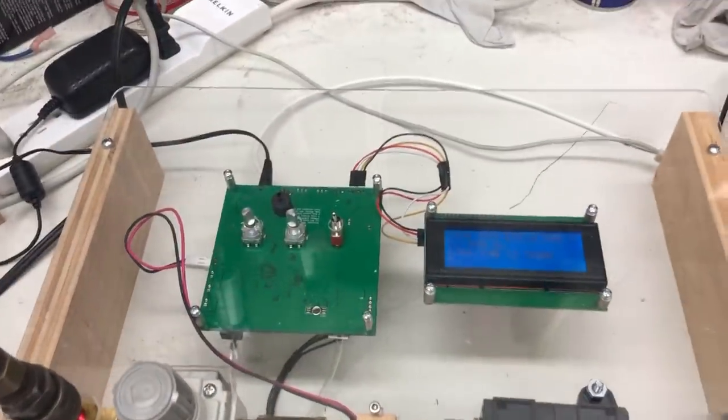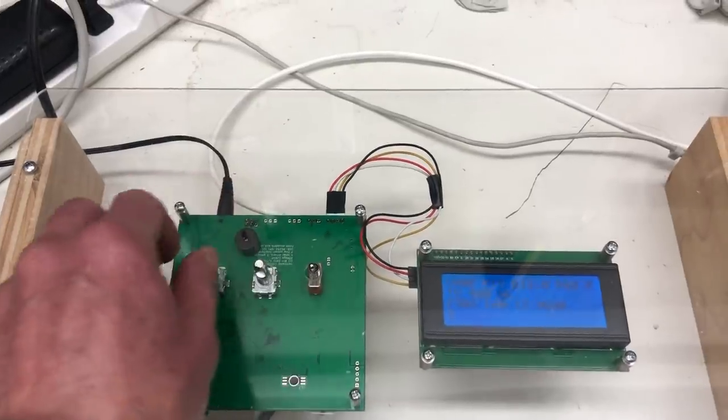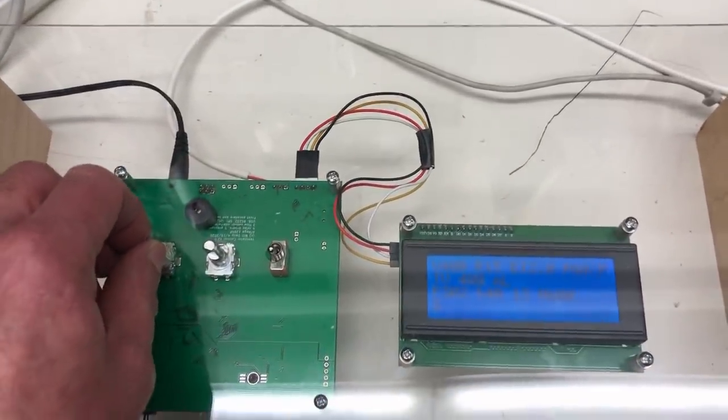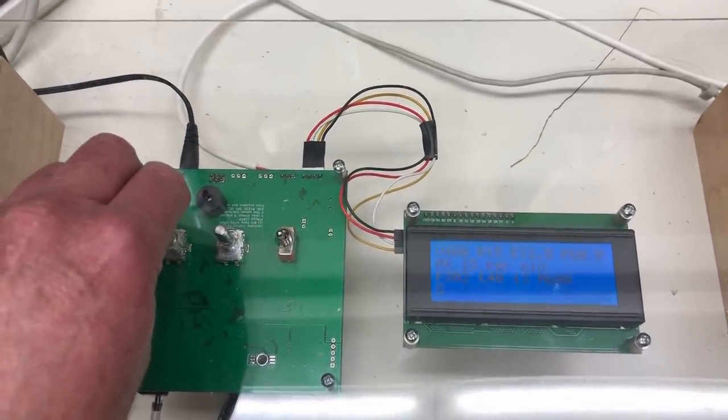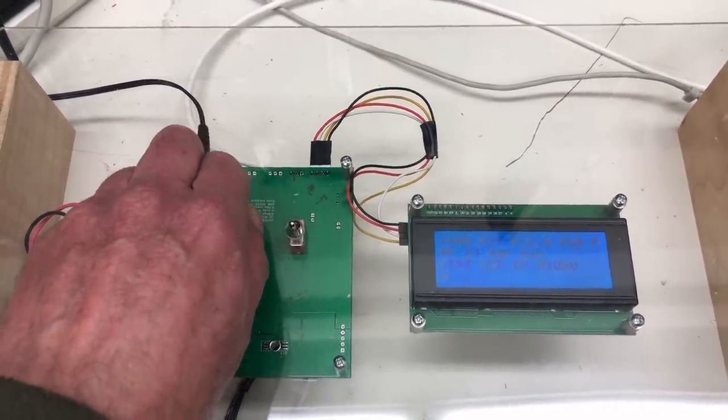The unit operates with a simple two-encoder interface. The left encoder selects a parameter. So here it's on tidal volume. If I turn the encoder, I can change respiratory rate. And in each parameter, the right encoder changes the value of that parameter.